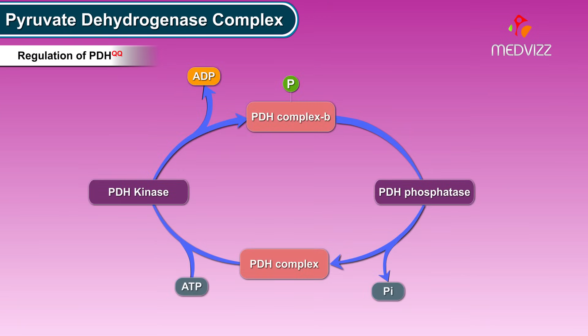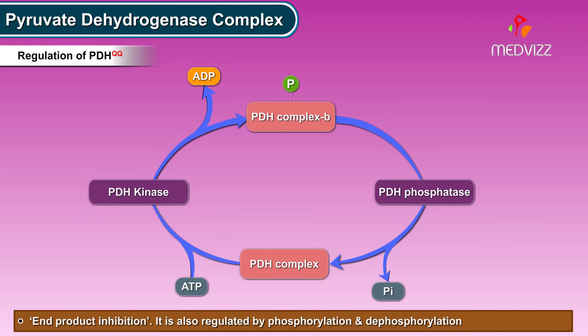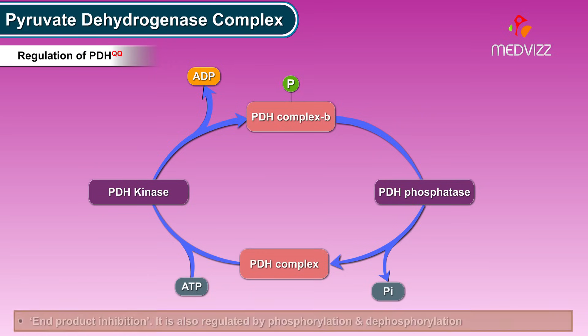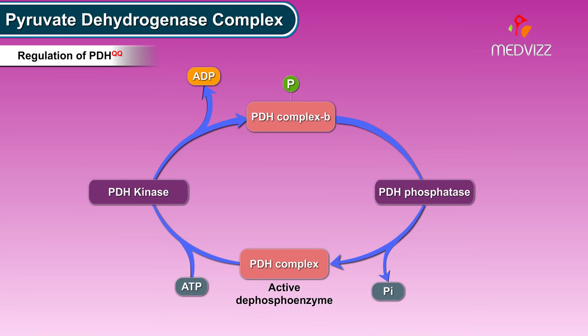Regulation of the pyruvate dehydrogenase complex is mainly an example of end product inhibition. It is also regulated by phosphorylation and dephosphorylation. PDH is active in its dephosphorylated state and inactive in its phosphorylated state.